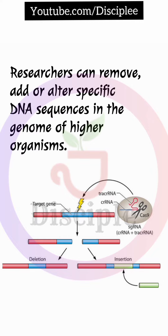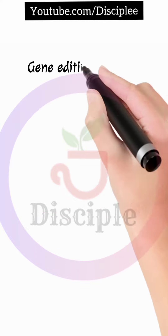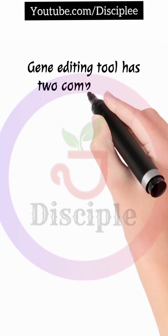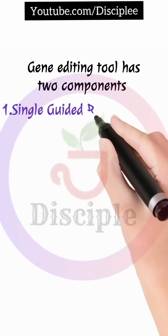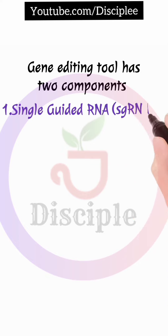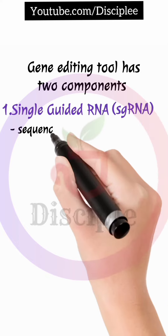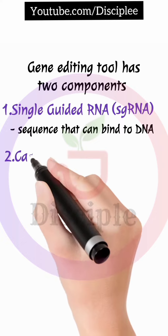The gene editing tool has two components. One is a single guide RNA, also known as sgRNA, that contains a sequence that can bind to the DNA.